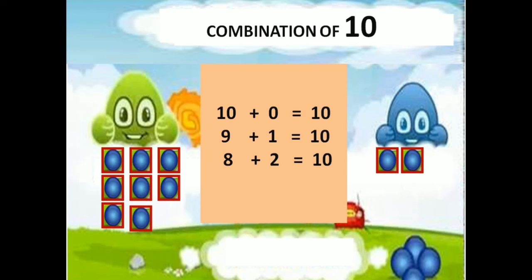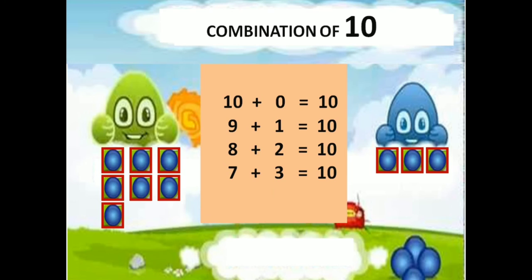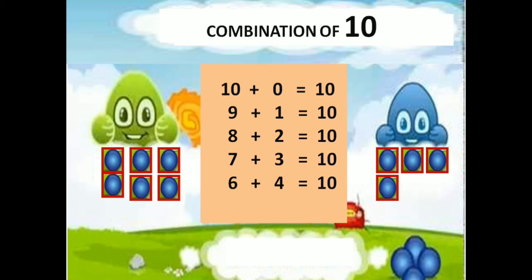Then, green doll having 8 balls, blue doll having 2 balls — 8 plus 2 equals 10. Green doll having 7 balls, blue doll having 3 balls — 7 plus 3 equals 10. Green doll having 6 balls, blue doll having 4 balls — 6 plus 4 equals 10.